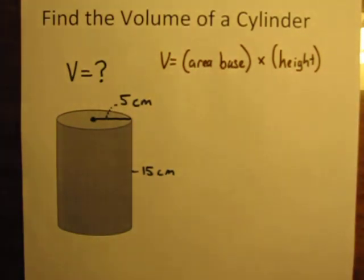When we had a prism, we were looking at rectangular prisms, so the base was a rectangle, and all we needed to do was multiply the length times the width of that rectangle to get the area of the base. Well, in this case, the base is a circle.